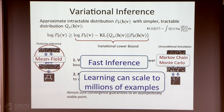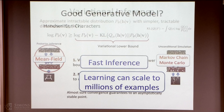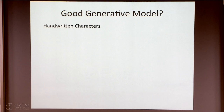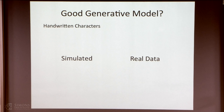Inference is fast because mean field inference is an optimization problem — you just do a few iterations, and learning can scale to a million examples. For estimating the data-independent statistics when running your Markov chain, these are data-independent so you can run them in parallel and scale the system up. Let me show you some results. I'll show you two panels — on one panel, data simulated by the model; on the other, real data. These are handwritten characters from 50 different alphabets around the world.